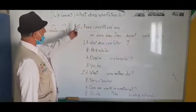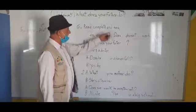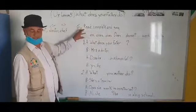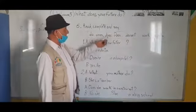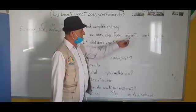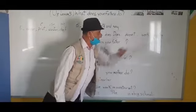Let's go to exercise number six. Read, complete, and say. We have here in this box some words: do, does, doesn't, work, works.